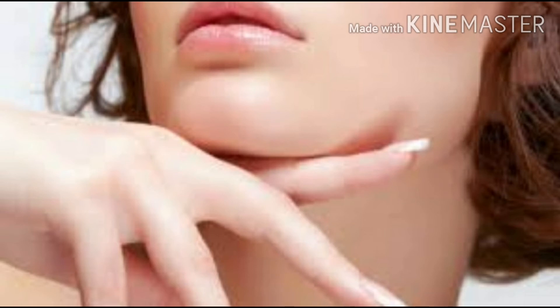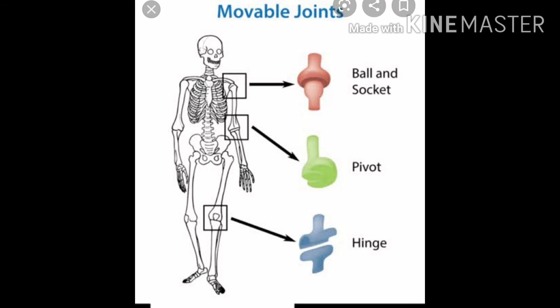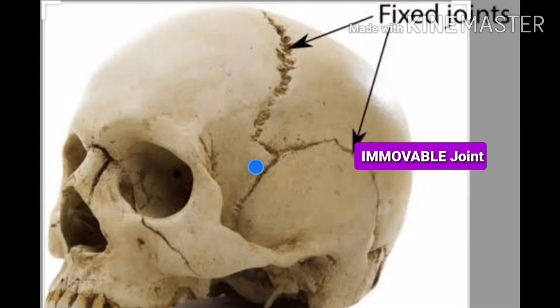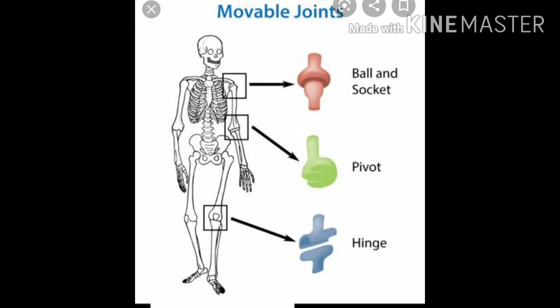The jawline is the place where our cheeks and ears meet. Now we will understand different types of joints — movable joints and immobile joints. Joints which cannot move are called immobile joints, like the joints in our skull. You cannot move the different parts of your skull. The joints in our elbows, shoulders, and wrist are examples of movable joints.